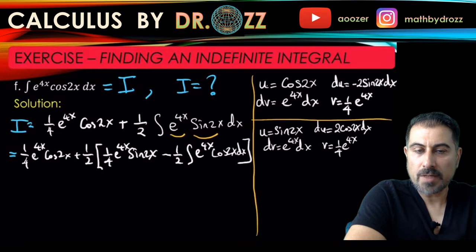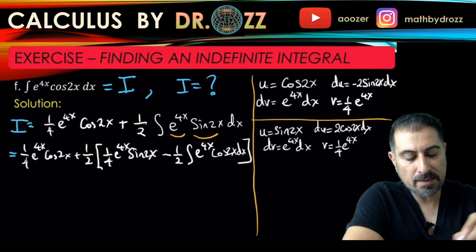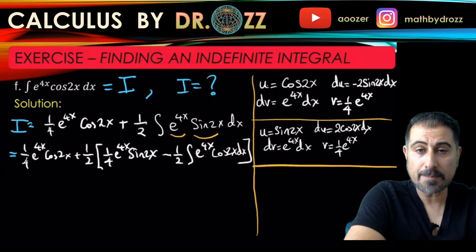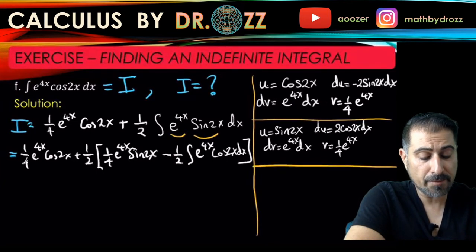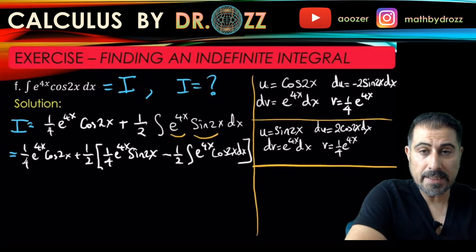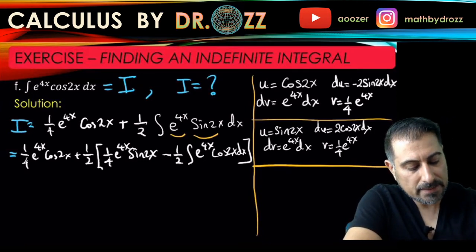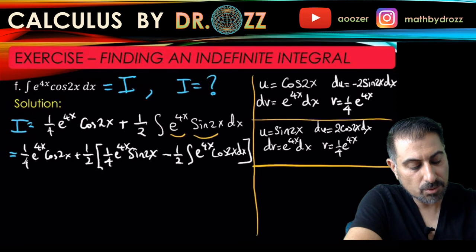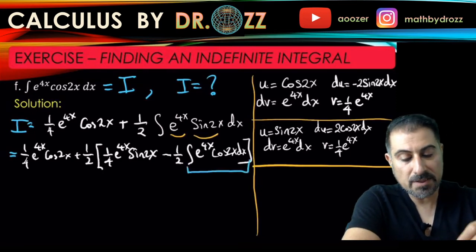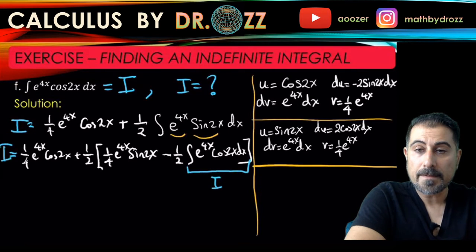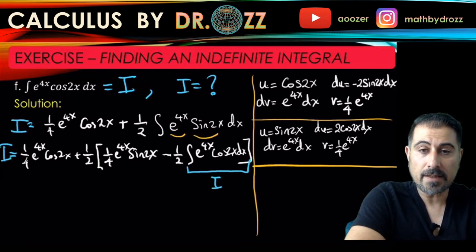Alright, so now we have to step back because this is the second time I applied integration by parts. Step back and see what's going on because I have another integral to take care of at the end, but that integral is the exact same integral that I started with. That's also I. So what happens here is that I on the left-hand side, you have I on the left-hand side and then you have I here.